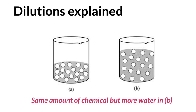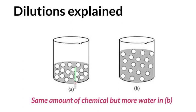The same is true in reverse — if I remove water, say I evaporated some water out, then it would become more concentrated. As I'll show you in the next video, if it becomes more concentrated, my percentage concentration will rise. If I dilute it, my percentage concentration will decrease.